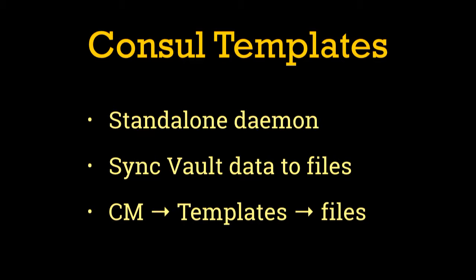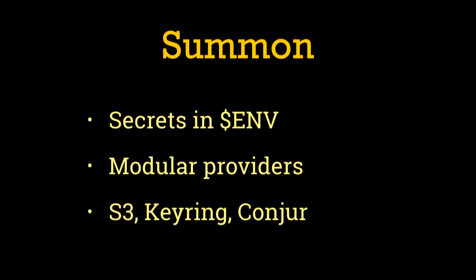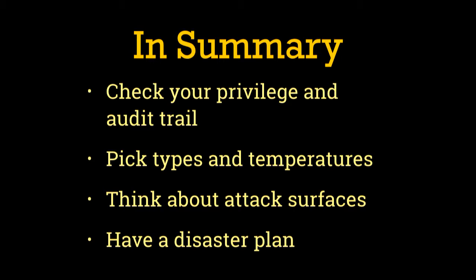Consul Templates is mostly useful if you're using HashiCorp Vault — it was originally part of HashiCorp Consul but now works with both Consul and Vault. It'll write data out to template files, which can be useful if you want to use HashiCorp Vault's auto-rotation system. Similarly, env-consul exists if you really need to store things in environment variables, and Summon is similar — it takes secret data, shoves it into environment variables, and runs a subprocess, but with modular providers for a whole bunch of systems. Summon is open source, so you can actually audit and make sure it's doing the right thing. In summary: check your privilege and audit trails, pick your types and temperatures of secrets, think about your attack surfaces, and have a disaster plan.